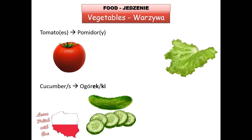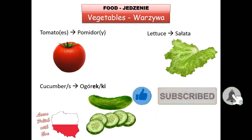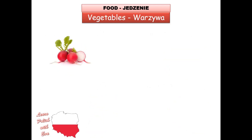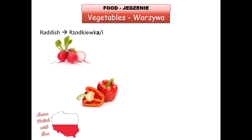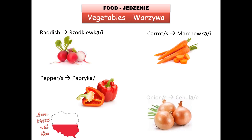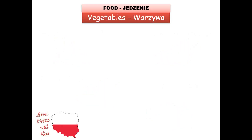We have lettuce — 'sałata', 'sałata'. Potatoes — 'ziemniak' or 'ziemniaki'. Radish — 'rzodkiewka', 'rzodkiewki'. Peppers — 'papryka', 'papryki'. Carrots — 'marchewka', 'marchewki'. Onion — 'cebula', 'cebule' in the plural version. These are vegetables, 'warzywa', that are very popular in Polish cuisine.